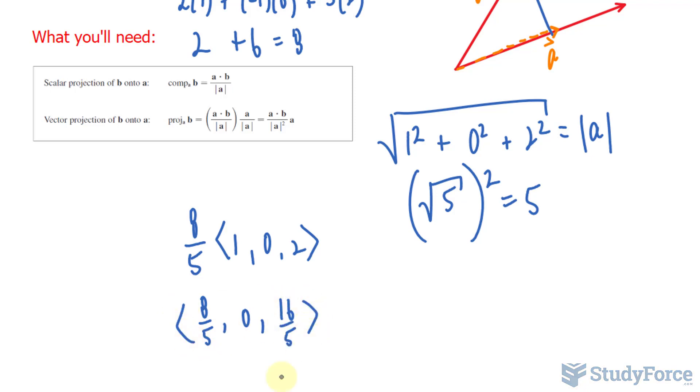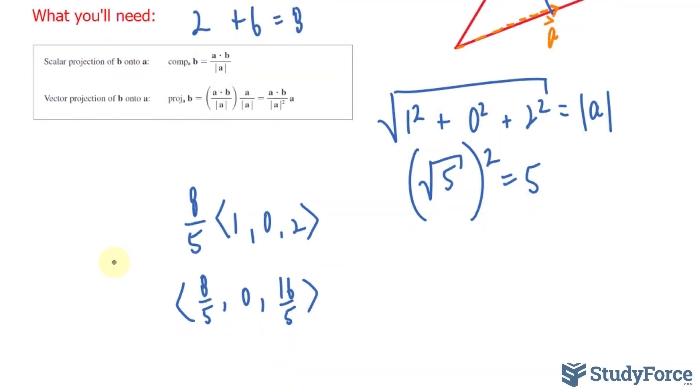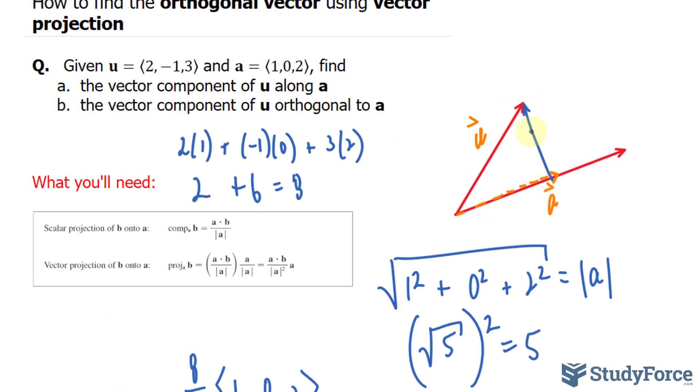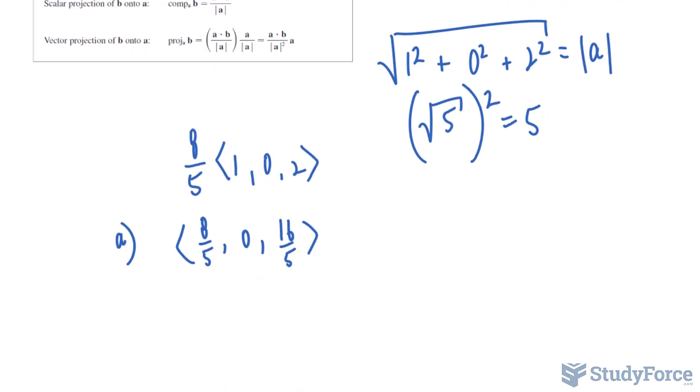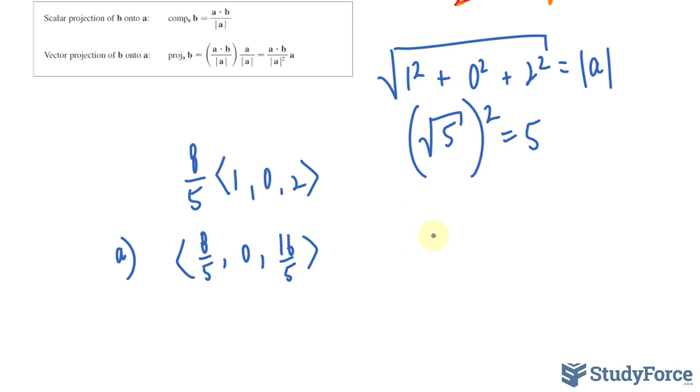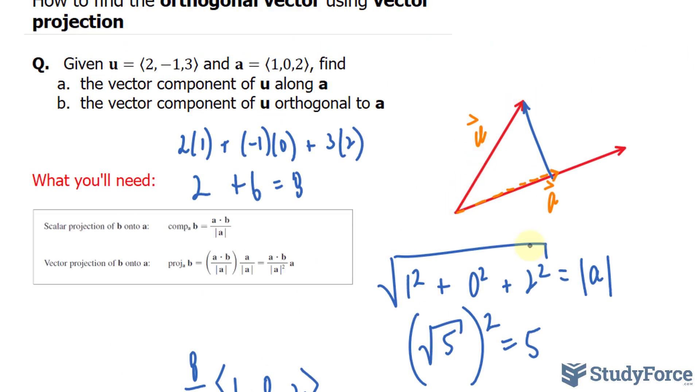This right here represents the vector projection of u along a. Okay, so that answers question a. Question b wants us to find this vector, and that can be done using this formula. Namely, you will subtract the vector u from the projection vector.